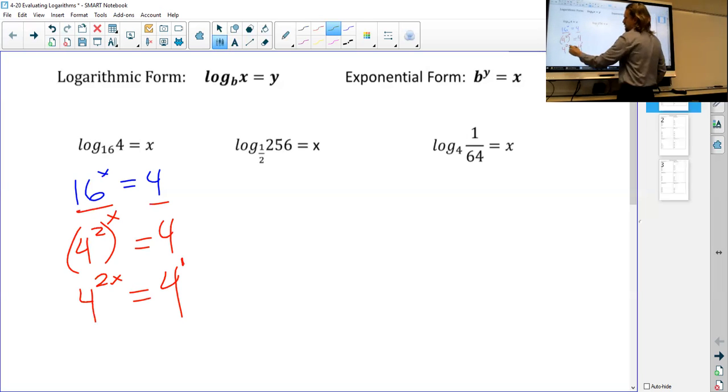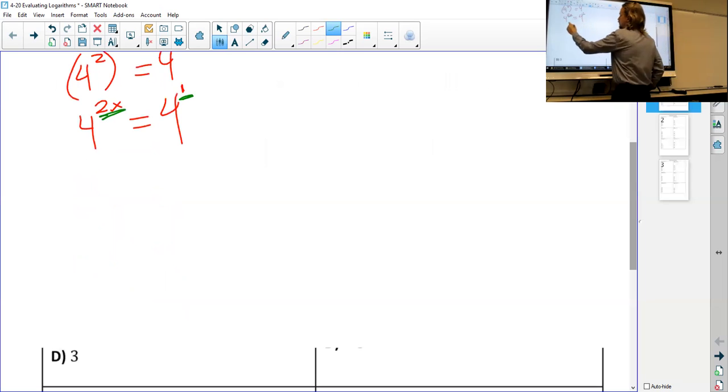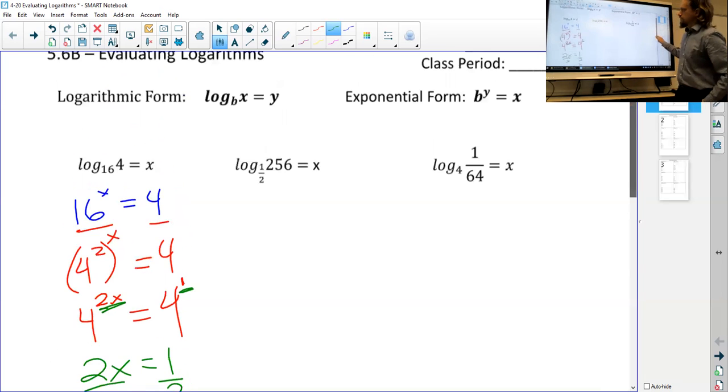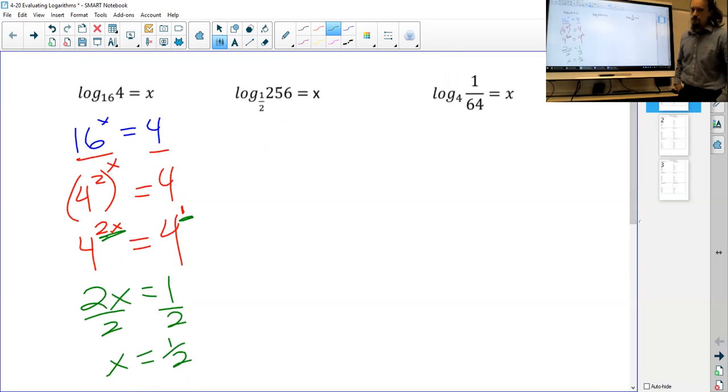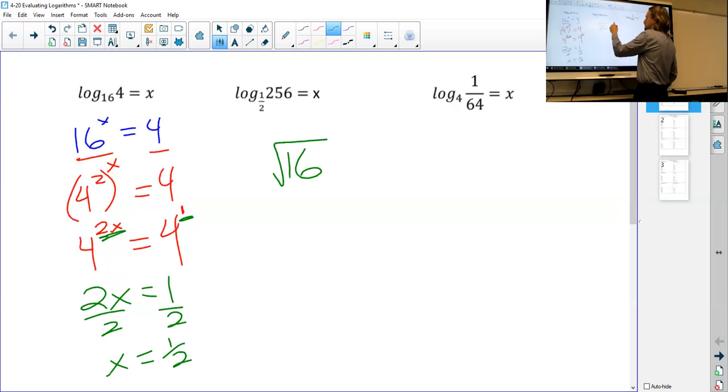So once you have the same base, then we can say 2x must equal 1, or if we divide both sides by 2, we get x equals 1 half. So our answer here, 16 to what power equals 4? That is the 1 half power. Now, hopefully you remember that when we did radicals, remember we said that the square root of 16 equals 4.